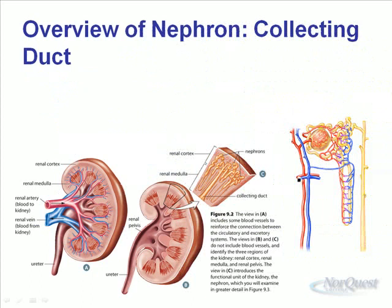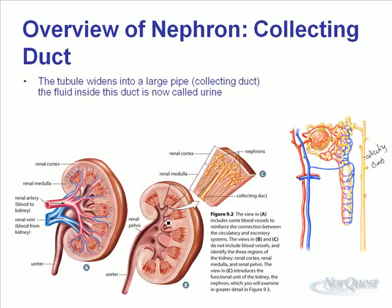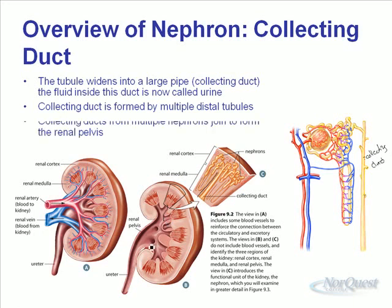After the distal tubule is the collecting duct, the structure at the very end of the tubule. Notice it has several branches — this is the collecting duct. Several nephrons each feed one collecting duct, so one collecting duct is attached to several nephrons and collects all of the urine being produced. Those collecting ducts form the renal pelvis. The tubules widen into this large pipe called the collecting duct, and the fluid inside is now called urine.